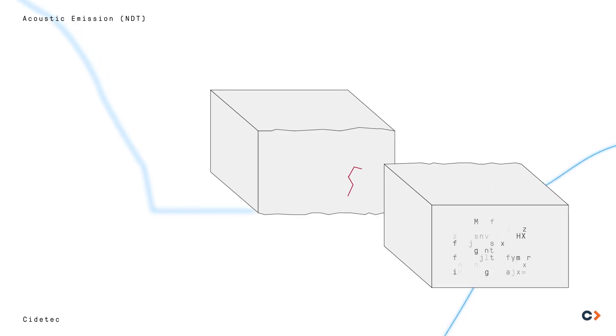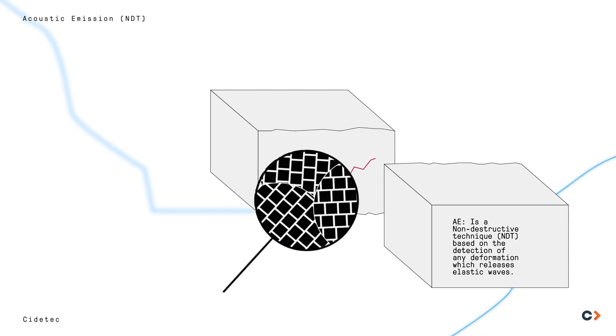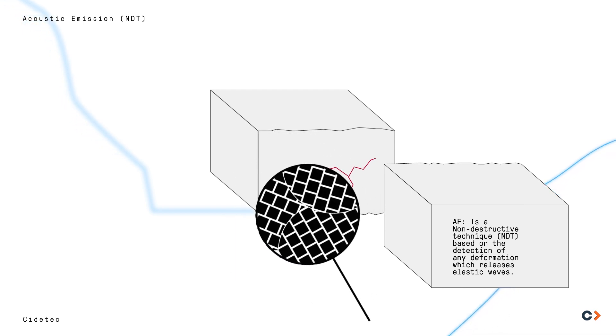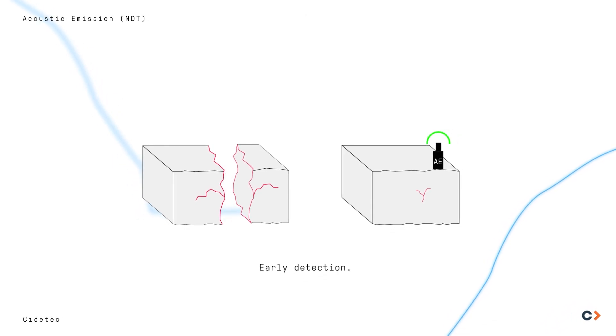This technique detects the waves released when small deformations occur inside the material. Thanks to that, we can notice the occurrence of corrosion long before it becomes apparent.